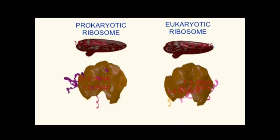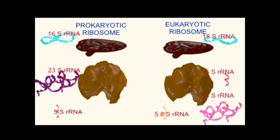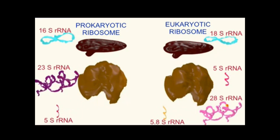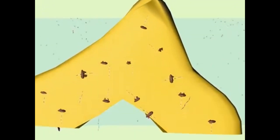The subunits made in the nucleolus are transported from the nucleus and assembled in the cytoplasm, where proteins will be synthesized. A growing cell requires millions of ribosomes, and the rRNA genes which encode the ribosomal RNA are the most active genes in eukaryotic genomes.